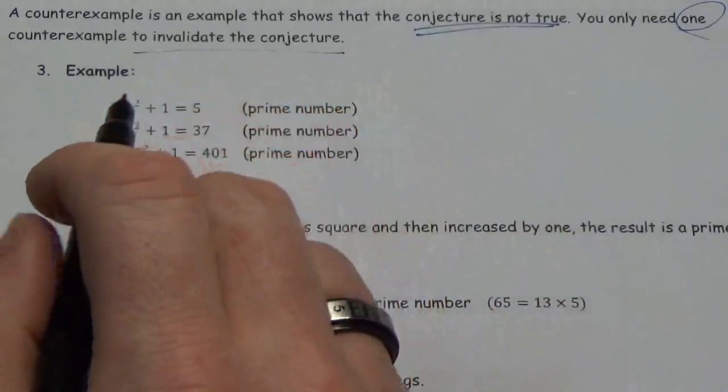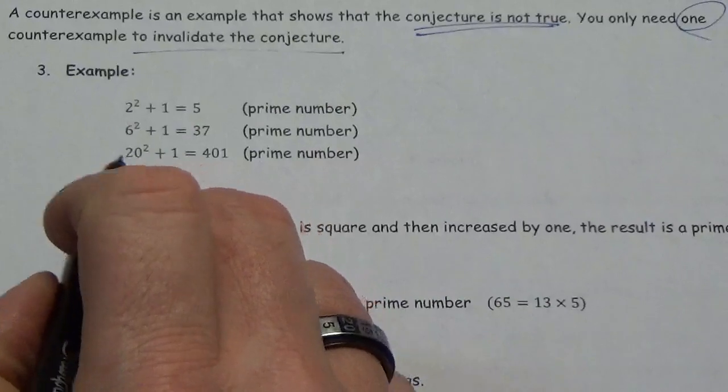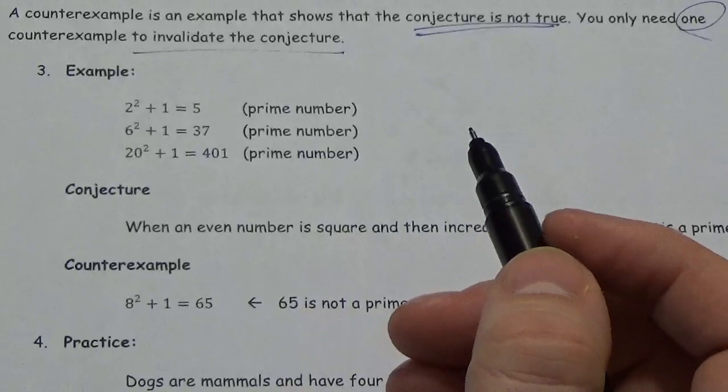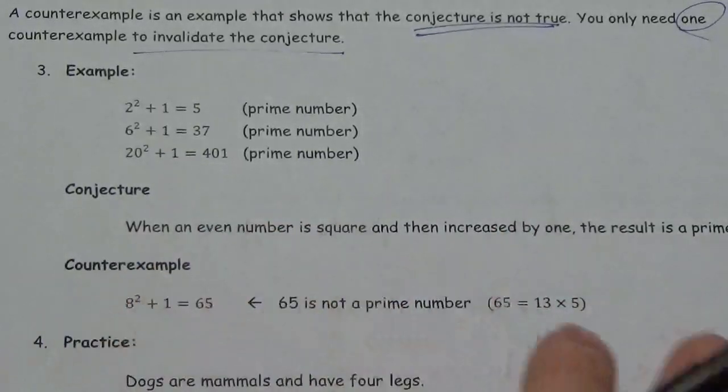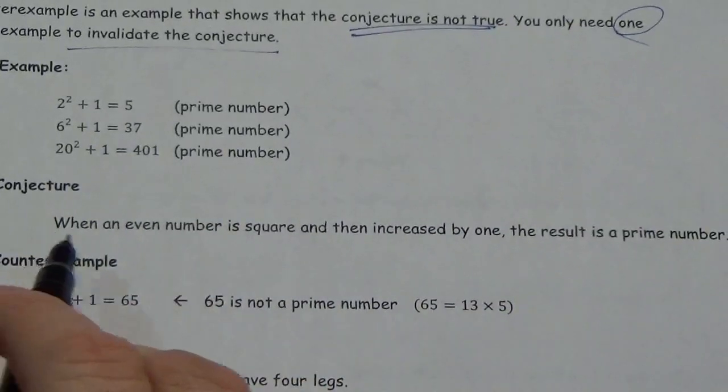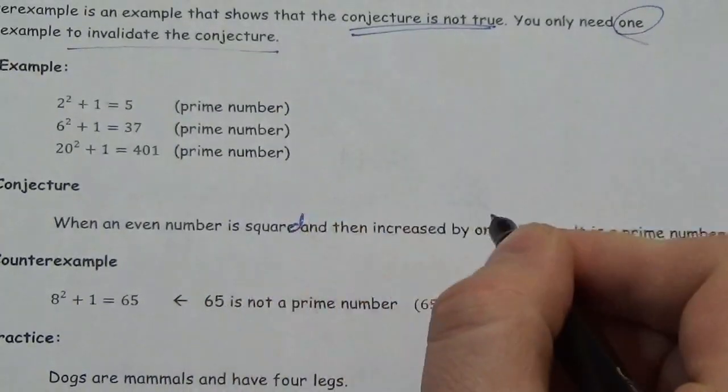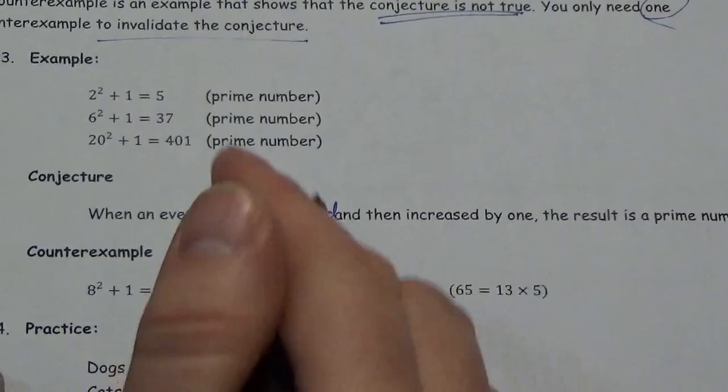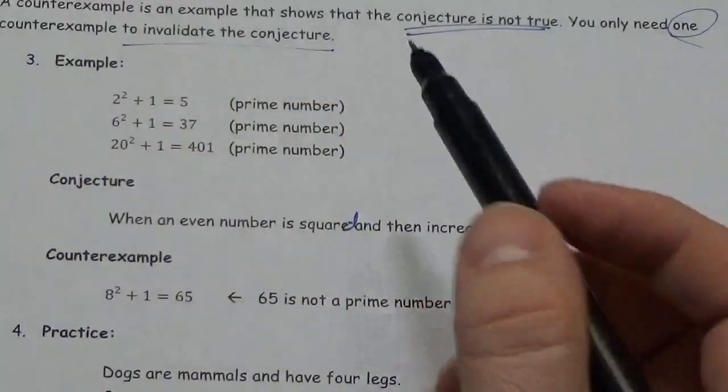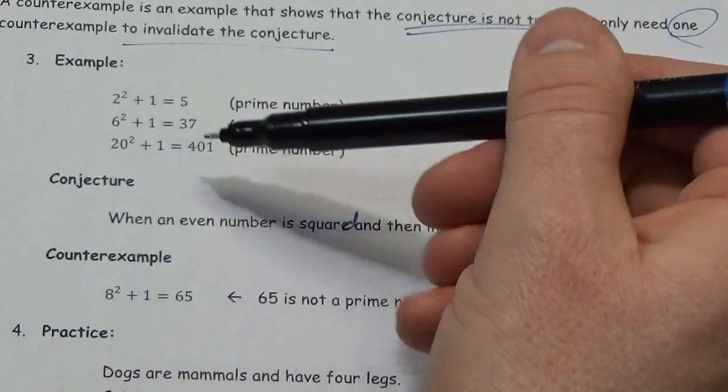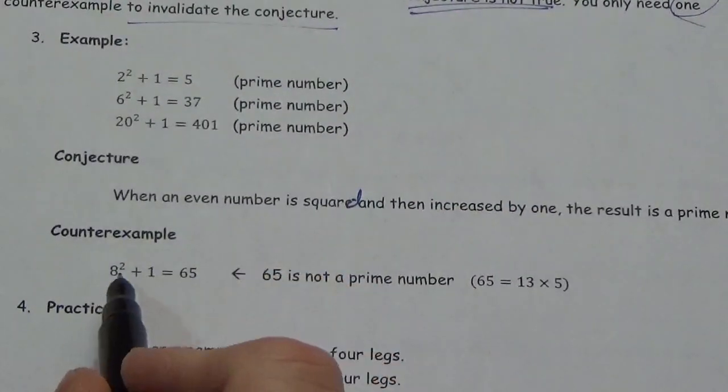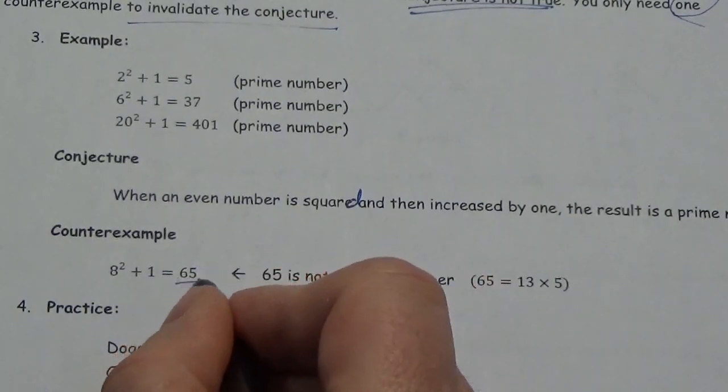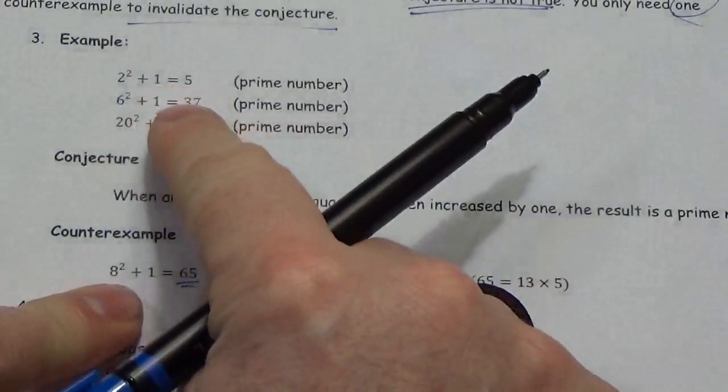So if 2 squared plus 1 is 5 and 6 squared plus 1 is 37 and 20 squared plus 1 is 401, you might conjecture that when an even number is squared and then increased by 1, the result is going to be a prime number. And that seems like a reasonable conjecture. I mean, look at my examples there. However, let's take a look at the next one here. But if I use 8, which is even and squared and add 1, I get 65.